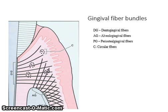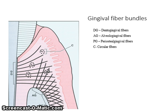Alveolo-gingival fibers extend from the periosteum of the alveolar crest into the gingival connective tissue. These fiber bundles attach the gingiva to the bone. The periosteum is a dense membrane composed of fibrous connective tissue that closely wraps the outer surface of the alveolar bone. Circular fibers encircle the tooth in a ring-like manner coronal to the alveolar crest and are not attached to the cementum of the tooth.